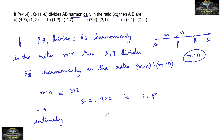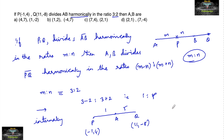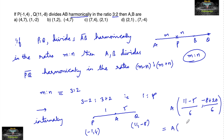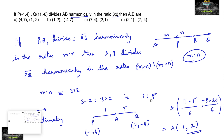Considering the internal division with ratio 1:5, where P is (-1,4) and Q is (11,-8), point A is calculated as: x = (1×11 + 5×(-1)) / (1+5) = (11 - 5) / 6 = 6/6 = 1, and y = (1×(-8) + 5×4) / 6 = (-8 + 20) / 6 = 12/6 = 2. So one point A is (1, 2).